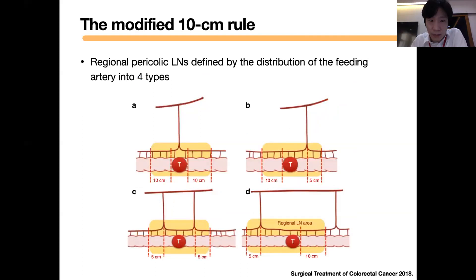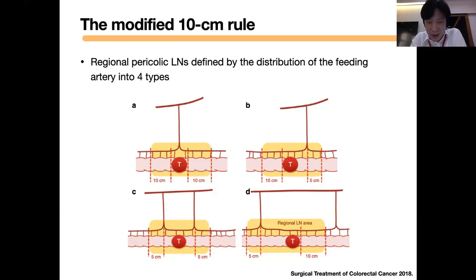This diagram shows the spreading of the pericolic lymph nodes defined by the distribution of the feeding artery. The extent of lymphadenectomy along the feeding vessel would be called D2. If you extend the lymphadenectomy to the level of the IMA, it would be called D3 dissection.